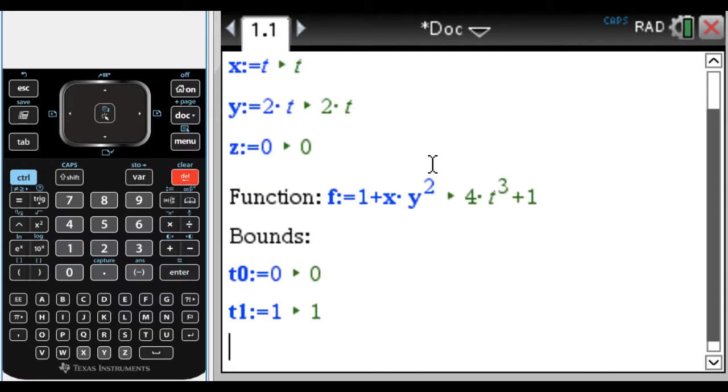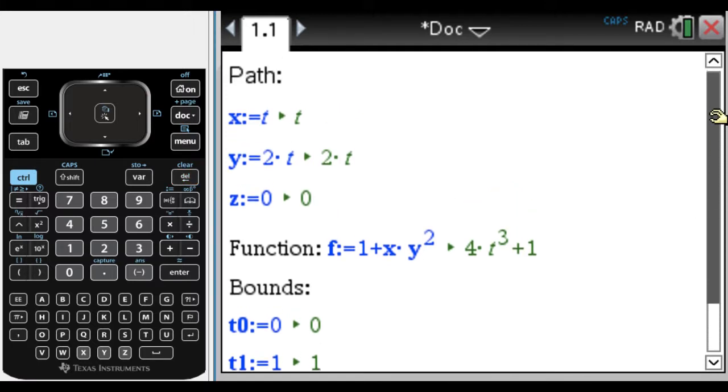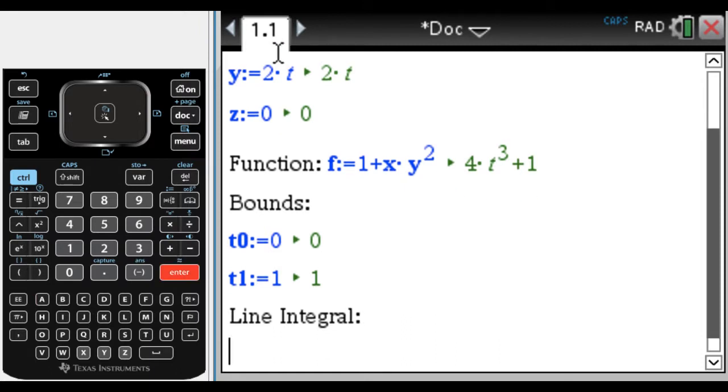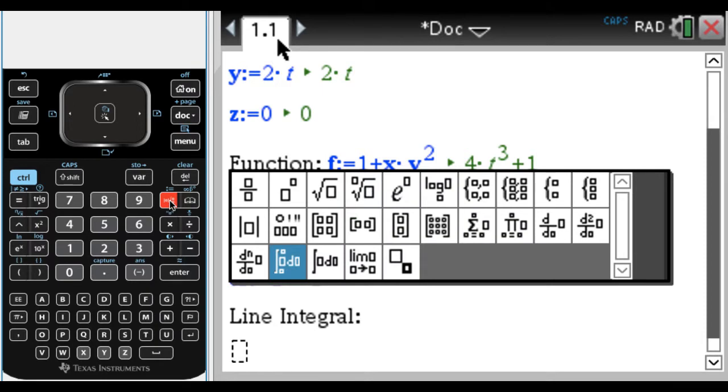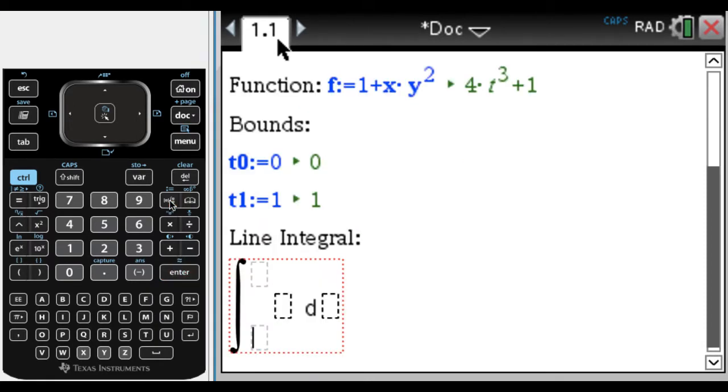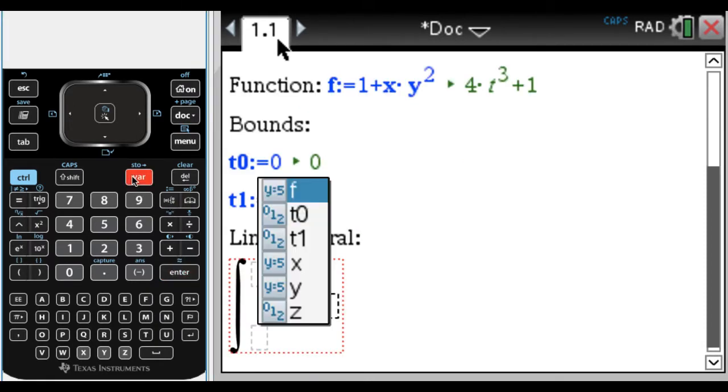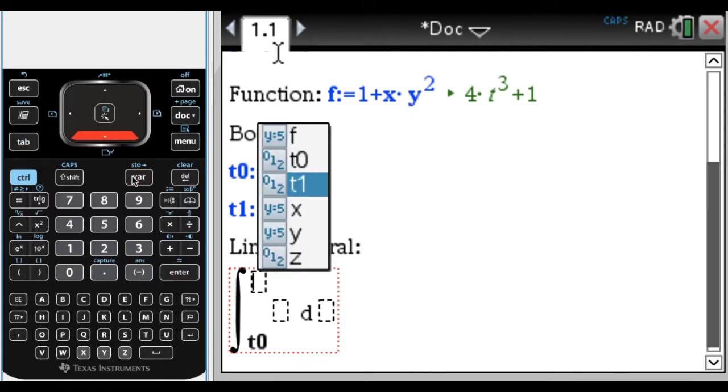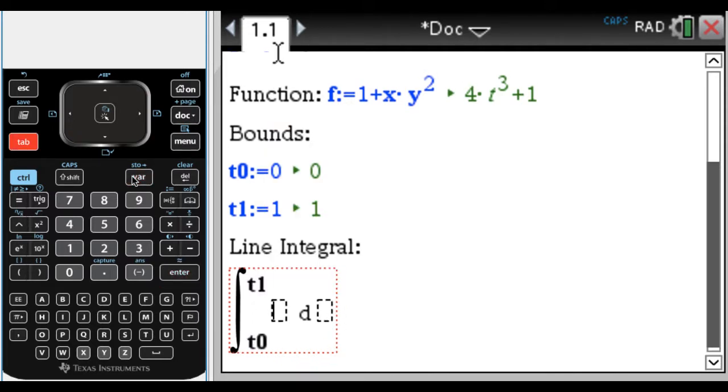Now I'm going to tell it to do the line integral for me. So I've actually stored X, Y, and Z. It knows what those are. I've stored the function. It knows what that is. I've got the bounds. So the line integral is going to be, I need a math box, so it's an integral and it's going to be the integral from T zero to T one.